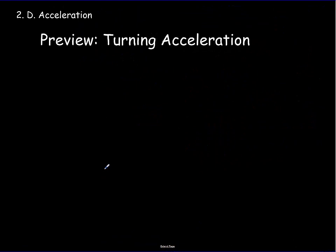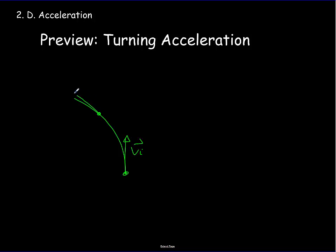Let me briefly preview the idea of a turning acceleration. The accelerations we've talked about so far involve speeding up or slowing down, but another way for things to accelerate is through a change in direction. Suppose an object follows a curved path — it changes direction. We draw a velocity vector at the beginning, the initial velocity. A short time later, it could be going the same speed — same vector length — but in a different direction.